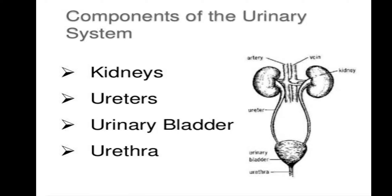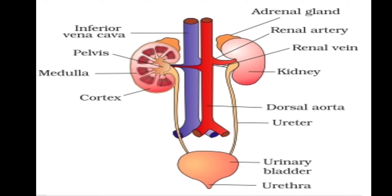The human urinary system consists of a pair of kidneys, a pair of ureters, a urinary bladder, and a urethra. Kidneys and ureters are both present in pairs — two each — while urinary bladder and urethra are single. The parts to label in the diagram are kidneys, renal artery, renal vein, ureter, urinary bladder, and urethra.